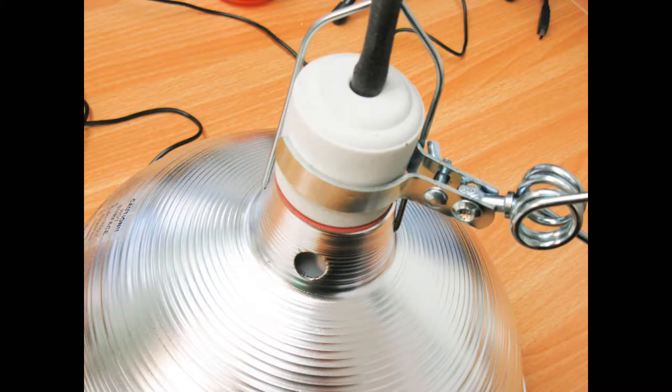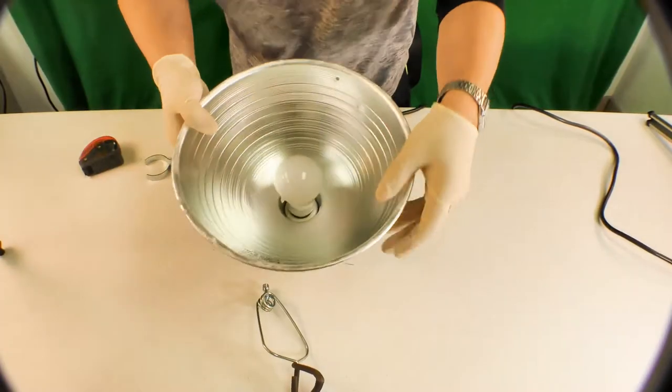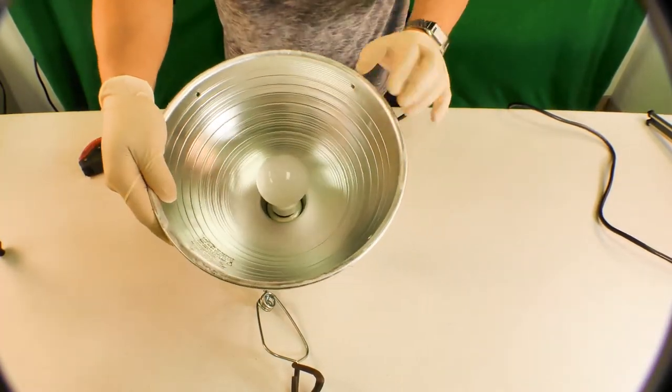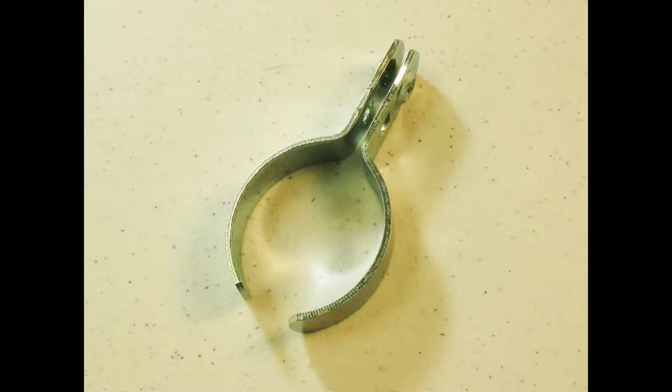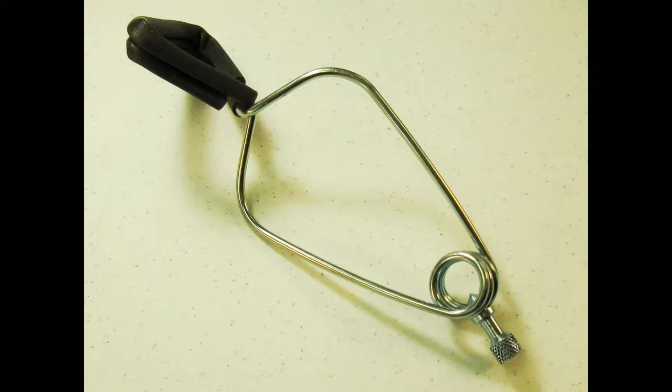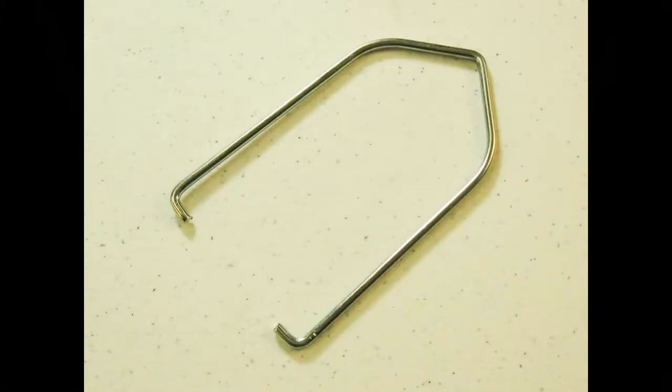Before we go on any further let's take a look at how it arrived. Number one, aluminum reflective bulb with porcelain ceramic socket comes pre-attached. Number two, the union clamp with bolt and wing nut. Number three, the foundation clamp that attaches to just about anything and everything. And number four, the hanger.